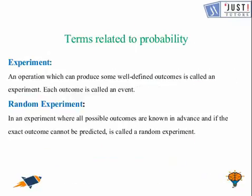So now let us move and let us see what is the experiment. So an operation which can produce some well defined outcomes are called experiment and each outcome is called an event. So in experiment, there are some outcomes and each of them is called event.